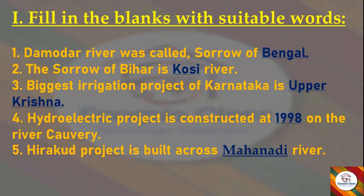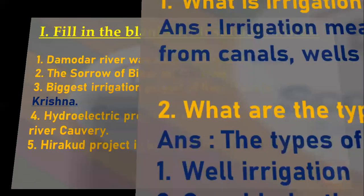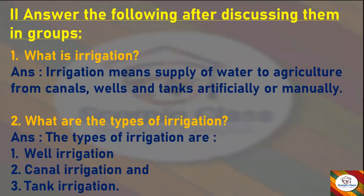Now let's go ahead with the answer-the-following questions. The first question is: What is irrigation? Answer: Irrigation means the supply of water to agriculture from canals, wells, and tanks, artificially or manually. Next question: What are the types of irrigation?